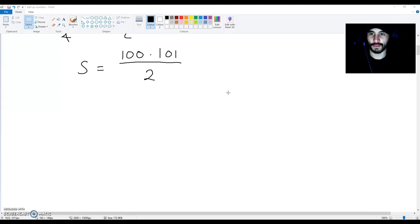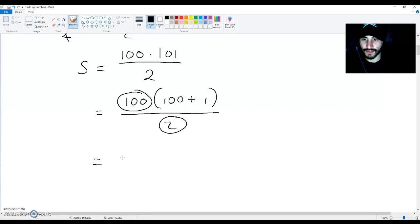So, 100 times 101 divided by 2 is the same as 100 times (100 plus 1) divided by 2. Now, because 100 divided by 2 is 50, we are going to end up with 50 times (100 plus 1). And this is the same as 50 times 100, which is 5000, plus 50 times 1, which is 50. And this adds up to 5050.